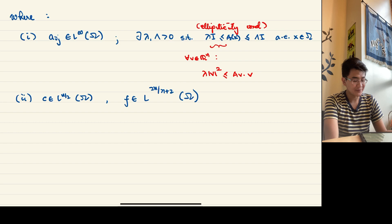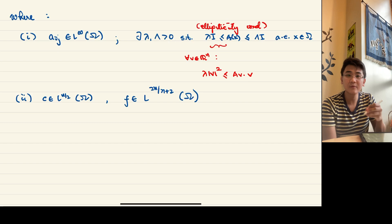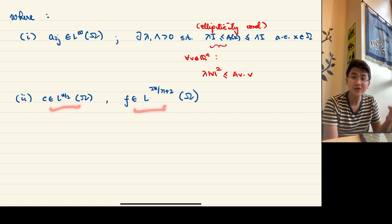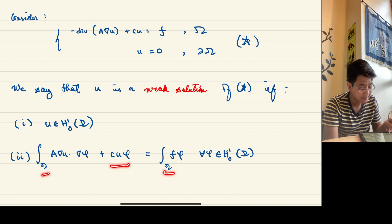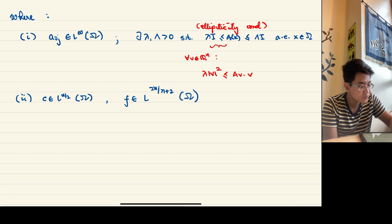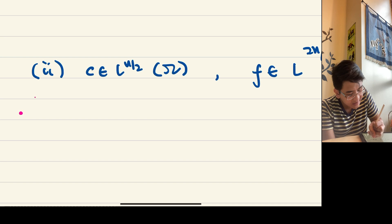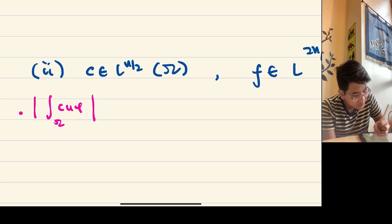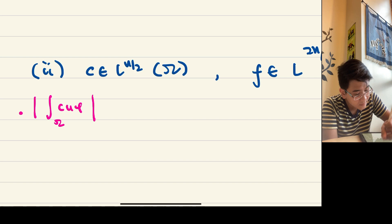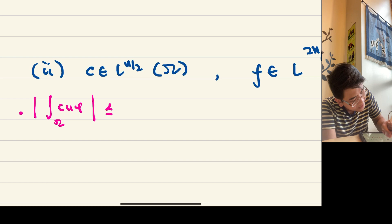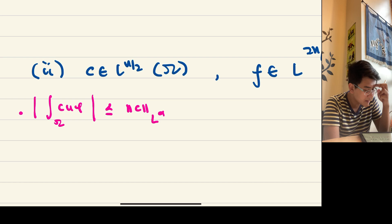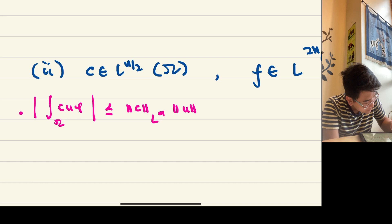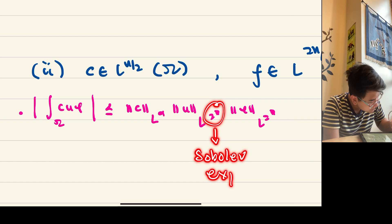Going back — these are the minimum assumptions so that the equation makes sense, meaning the integrals in the weak formulation are finite for every test function phi. Let's quickly demonstrate why. For the first term, we look at the integral of C U phi over omega. Since U and phi are both in H^1_0, by Hölder's inequality this is bounded by the L^alpha norm of C times the L^{2*} norm of U times the L^{2*} norm of phi, where 2* is the Sobolev exponent.